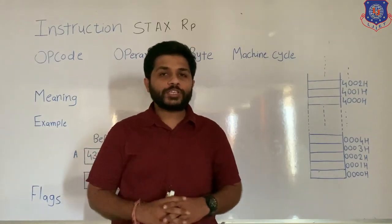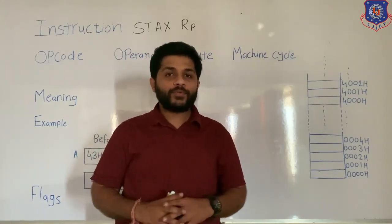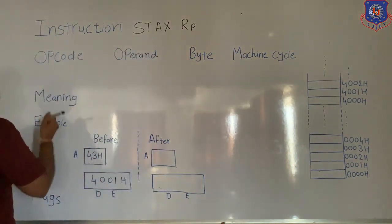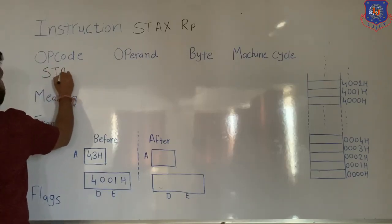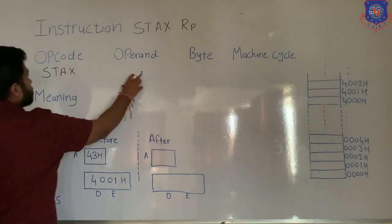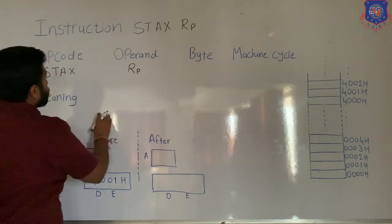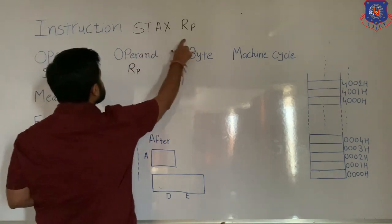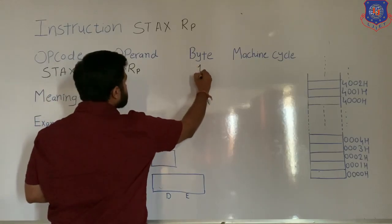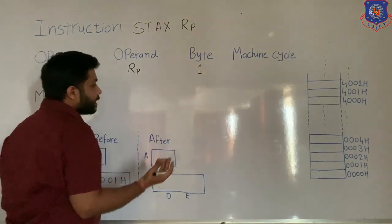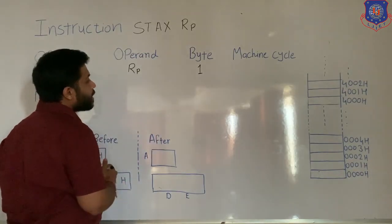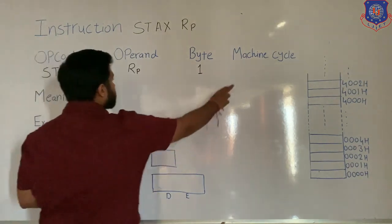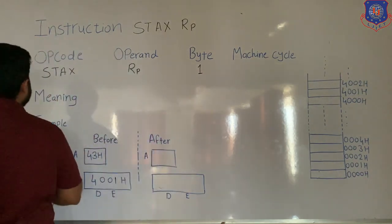Now let's see the instruction STAX register panel. In this instruction, the first part is the opcode — STAX — and the remaining part is the operand, which is the register panel. In this instruction, no data is present, which means this instruction is of one byte. A one-byte instruction means when stored in memory, it will occupy only one memory location.